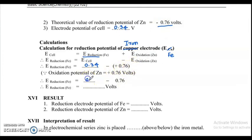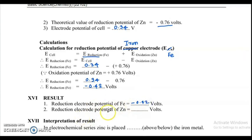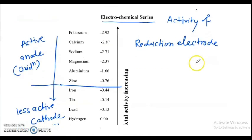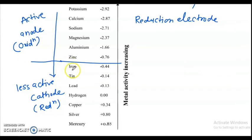Putting in the values: 0.34 − 0.76 = −0.42 V. So the reduction electrode potential of Fe is −0.42 V, and the reduction electrode potential of zinc is −0.76 V. We got −0.42 V by experiment. Comparing with the electrochemical series table, the standard reduction potential of iron is −0.44 V, and our experimental result of −0.42 V is near about the same.